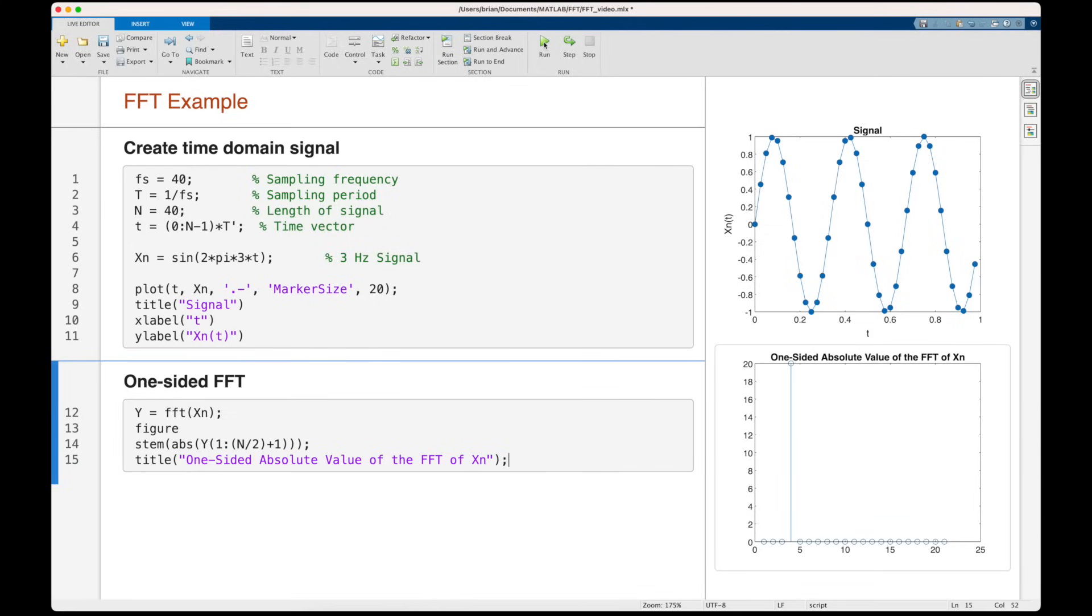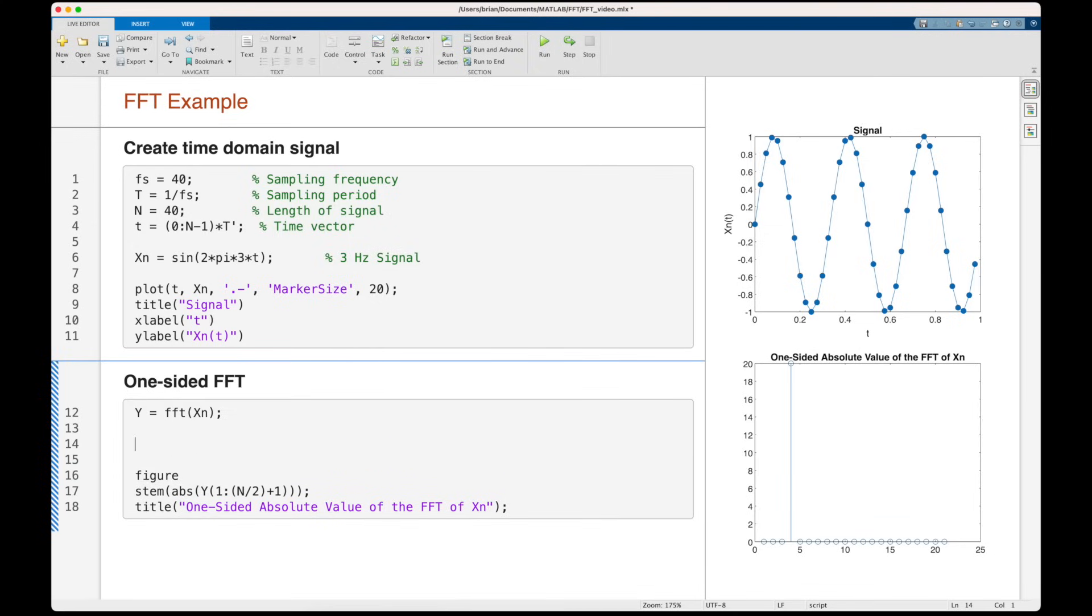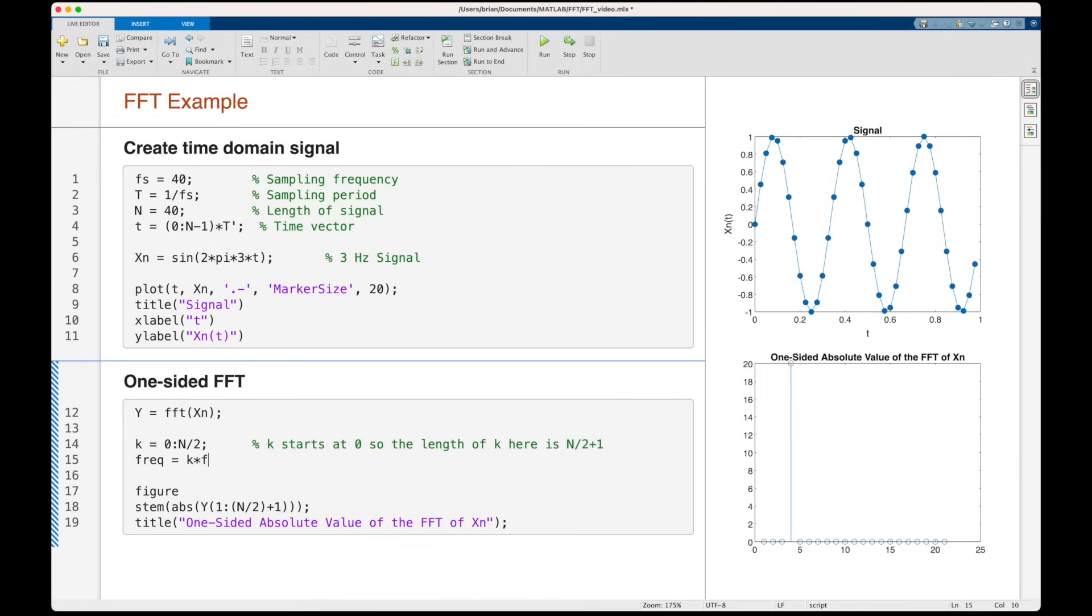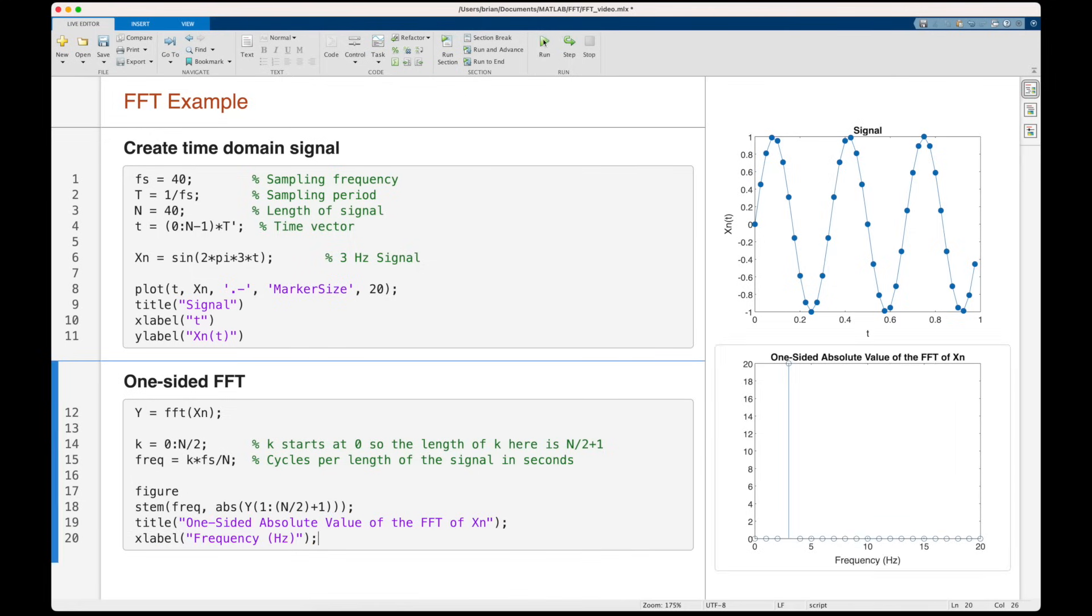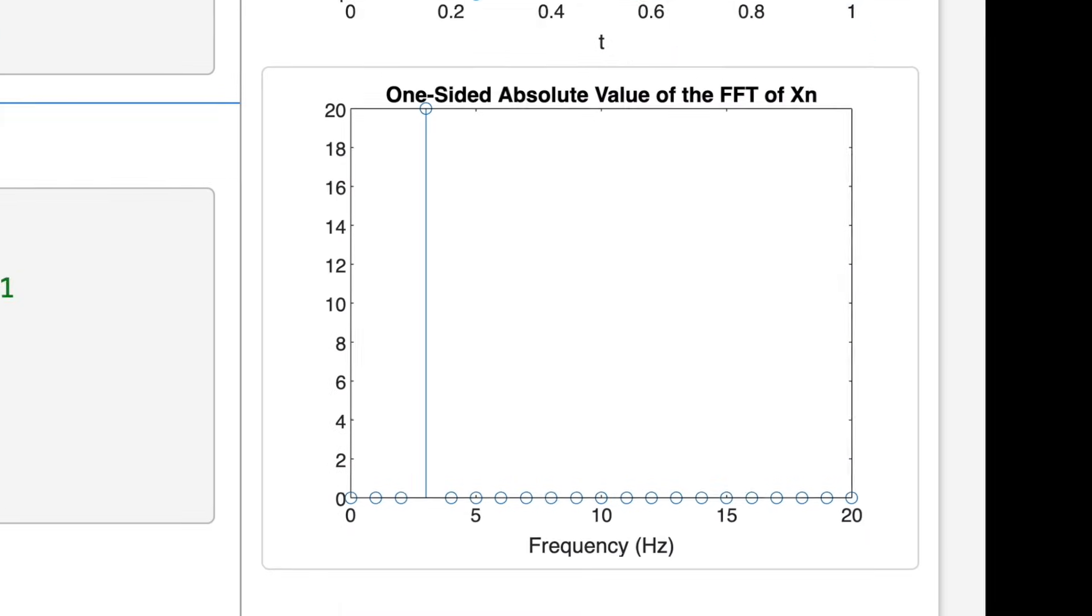Except now we want to plot this against frequency in hertz. So we have k going from zero to n over two to account for the 21 samples in our one-sided FFT. And we convert that to frequency by multiplying it by the sample frequency divided by the number of samples. And finally, we can plot this and as expected, the peak is right at three hertz.